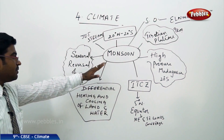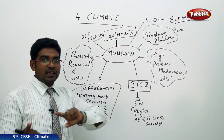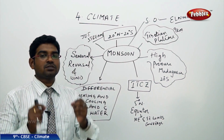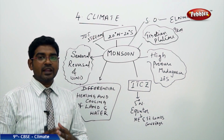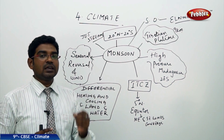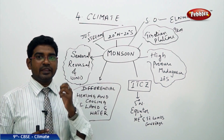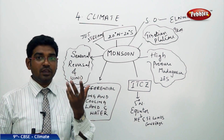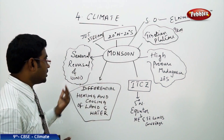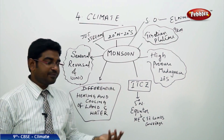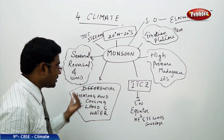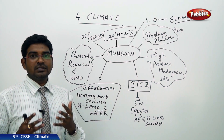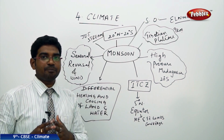The literal meaning of the word monsoon is the seasonal reversal of the winds, derived from the Arabic word 'mausam'. In Arabic, mausam means the change of the movement of the winds. That is how the meaning of the word monsoon has come about.